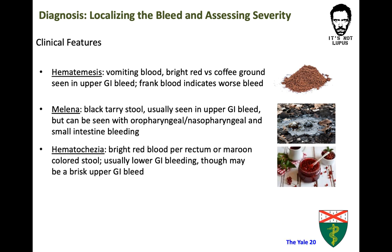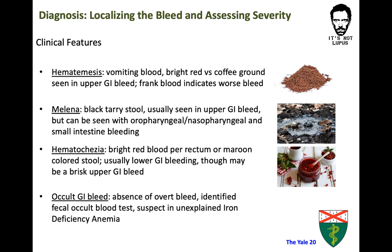Hematochezia refers to frank blood in the stool, usually bright red or maroon colored, and is more frequently associated with a lower GI bleed. However, a brisk upper GI bleed is the source for 10 to 15% of patients with severe hematochezia. Finally, it is important to be aware of occult GI bleed, which refers to bleeding that is not visibly apparent. It may not have a clear source right away and is often identified with a fecal occult blood test. For example, one might suspect an occult bleed in a patient with unexplained iron deficiency anemia.